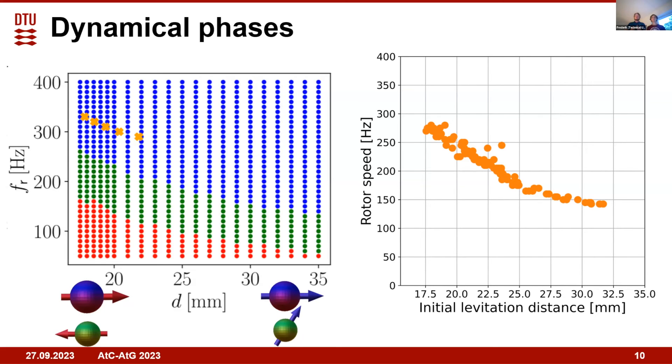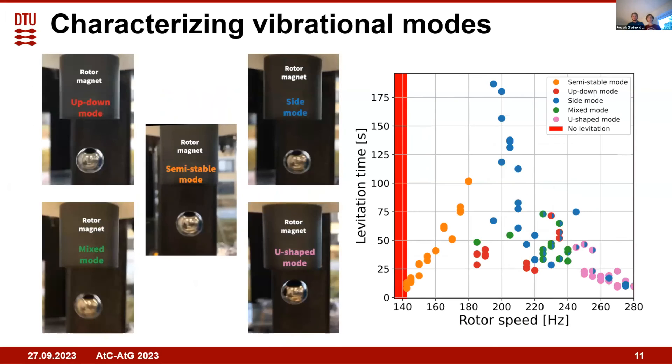Now onto something that the model also cannot really predict, and this is the different modes that the phenomenon can have.